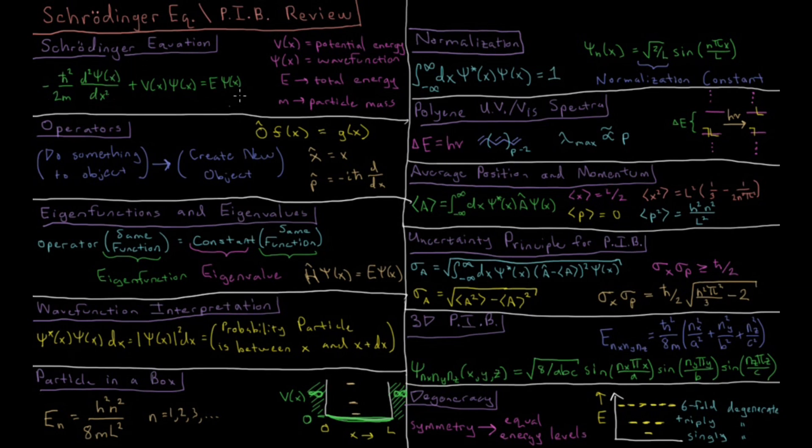Once we have this wave function, once we have this psi of x, we need to know how to interpret that. We interpret it through what is called a Born interpretation, which is that the complex conjugate of the wave function times itself, which is equivalent to the absolute magnitude of the wave function squared, times dx, some small region of space, is the probability that you find the particle between x and x plus dx.